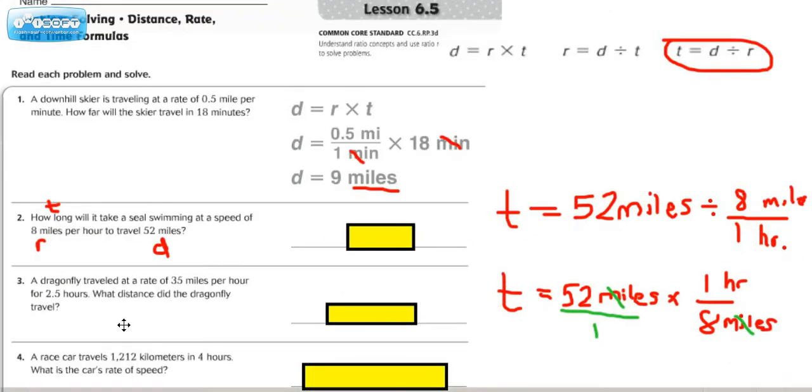So now let's move on. Number 3, a dragonfly traveled at a rate of 35 miles per hour for 2 and 5 tenths hours. What distance did the dragonfly travel? Let's clean up our work here to give ourselves some room, and let's think about what they're really asking here.